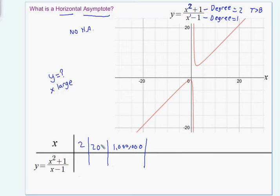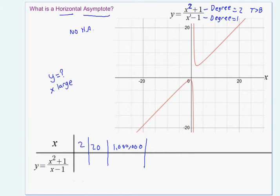My point is that for small x values like 2 and 20, these lower degree terms like plus 1 and minus 1 play a significant role. But for large x values, adding 1 and subtracting 1 don't really play an important role in what the actual output is. For small numbers, you'll see that adding 1 and subtracting 1 makes a big difference.